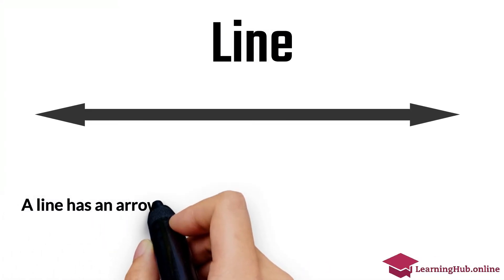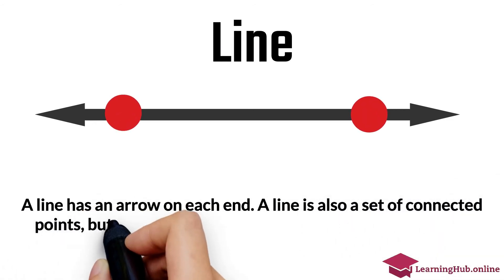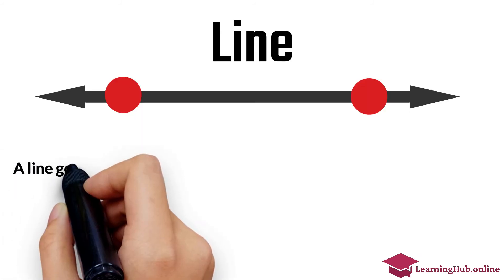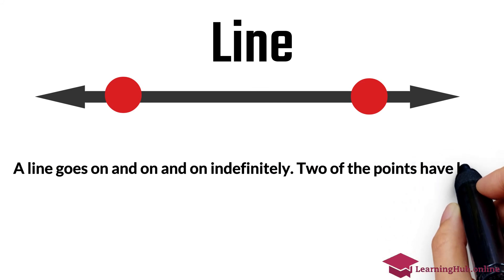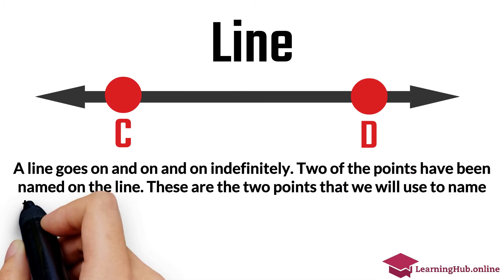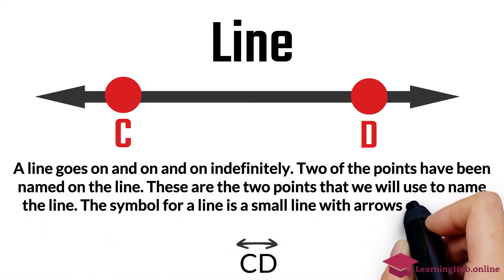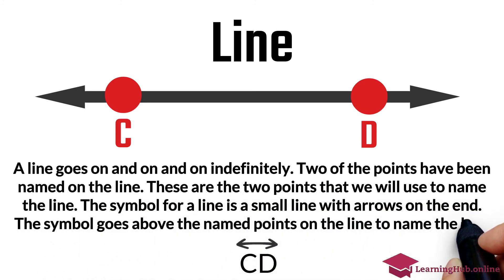Line. A line has an arrow on each end. A line is also a set of connected points, but the line does not end, as indicated by the arrows. A line goes on and on and on indefinitely. Two of the points have been named on the line. These are the two points that we will use to name the line. The symbol for a line is a small line with arrows on the end. The symbol goes above the named points on the line to name the line.